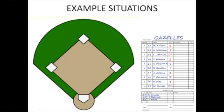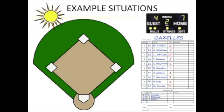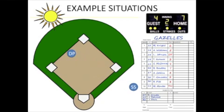Here are some examples for coaches. In these examples, the DP is batting for the pitcher, listed as the flex in the tenth position. It's a hot August day with oppressive humidity. This is your third game of the afternoon and your players are dragging. In the second inning, your shortstop is struggling, so you send the DP out to play shortstop.